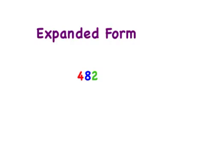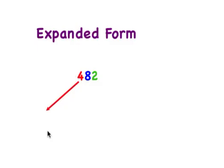Let's review writing the number 482 in expanded form. We know that the green two is in the ones place, the blue eight is in the tens place, and the red four is in the hundreds place. What is the value of the digit four in the hundreds place? We know that digit four in the hundreds place doesn't just mean four.